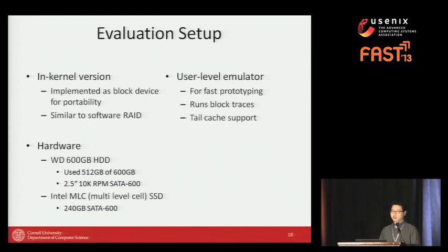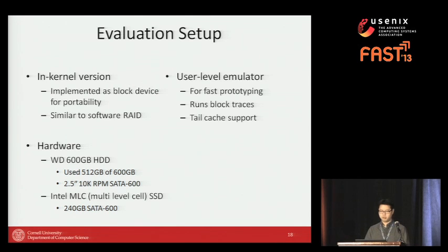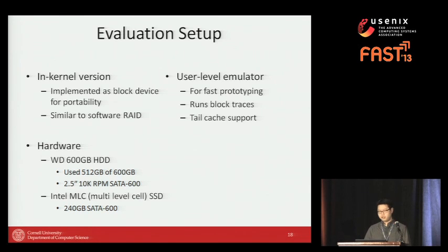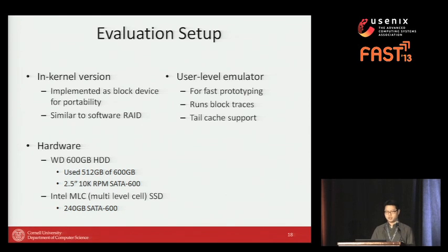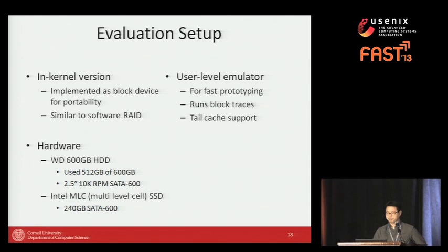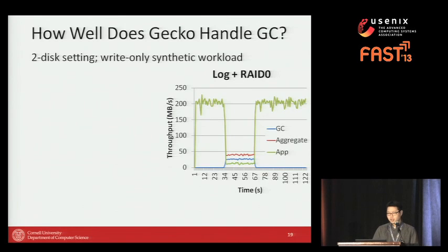For evaluation, we prepared two versions of Gecko: an in-kernel version designed as a block device or kernel module, implementing the basic chain logging scheme and garbage collection; and a user-level emulator capable of re-running workload traces on the Gecko system. Hardware used: 600 GB SATA hard disk drives at 10k RPM, and an Intel MLC flash for the cache.